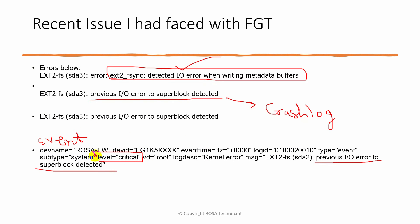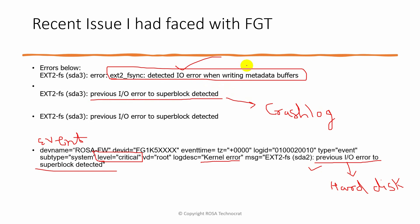So what does this error mean? 'Kernel error: previous IO error to superblock detected.' As the name says, IO error refers to input/output device issues, and 'block' refers to the hard disk. This error is related to the hard disk on your device or on the FortiGate. Similarly, 'detected IO error when writing metadata buffers' - writing means writing to the disk - is also related to the same disk issue.